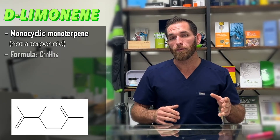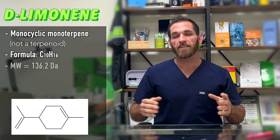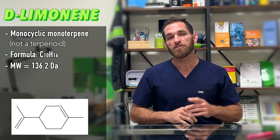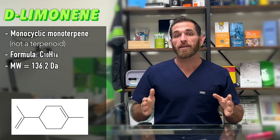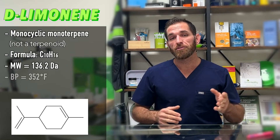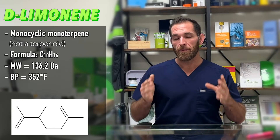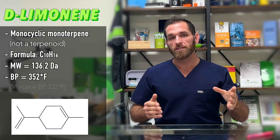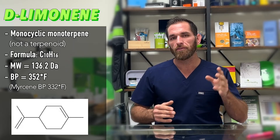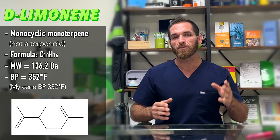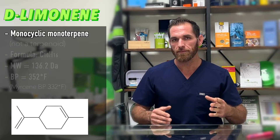Just like all the other monoterpenes, the molecular formula for limonene is C10H16, and its molecular weight is 136.2 Daltons. Its boiling point is around 352 degrees Fahrenheit, a little different from myrcene which was around 331-332, because limonene has a ring in its structure, making it a little more stable.